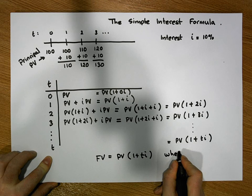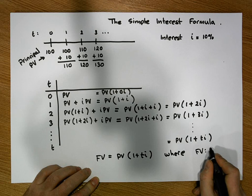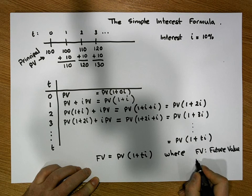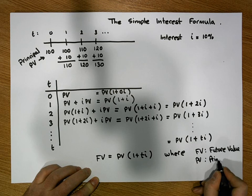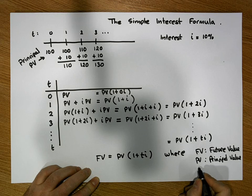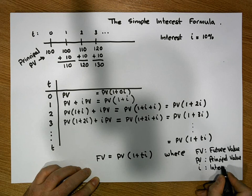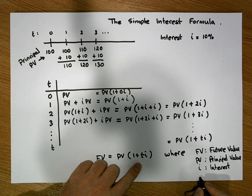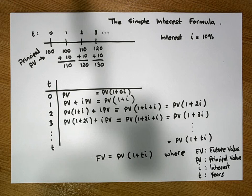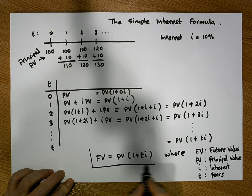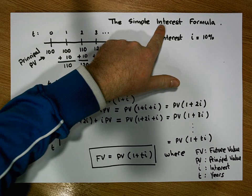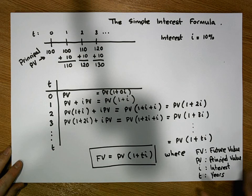So the future value FV equals PV times (1 + TI), where FV is the future value, PV is the principal value, I is the interest rate — importantly, converted into a decimal — and T is the number of years that have elapsed. This is our general formula for calculating the future value of an account where interest is applied using a simple interest method.